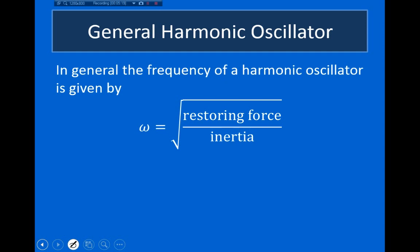In general, for any harmonic oscillator, the angular frequency is typically going to be the square root of something that describes the strength of the restoring force divided by some measure of inertia. For a spring and mass, the spring constant k describes the strength of the restoring force, and the mass m is the inertial component. In the case of a mass attached to a string swinging back and forth, it's gravity that pulls the mass back to equilibrium, and the length of the string increases the inertia — so the longer the string, the larger the inertia.